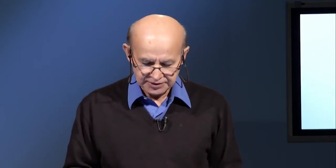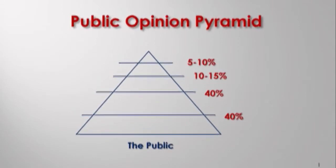Then we get to the bottom 40%. It really is comprised of people who, for lack of better terms, at least politically, are out of it. They don't vote and they really don't know much about the world. However, these people may know a lot about something that is of interest to them. Looking at the bottom 20% within that last 40%, these are the people I call the unreachables — people that even if you have a charismatic leader or a major crisis, they may not even become mobilized or interested.